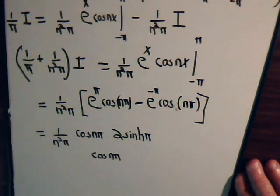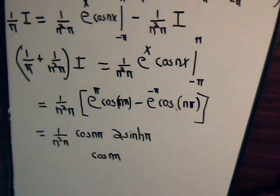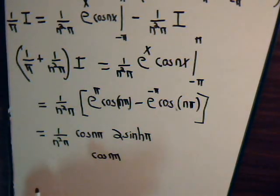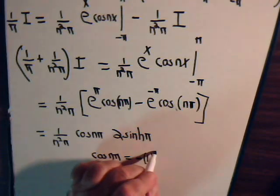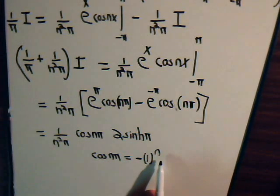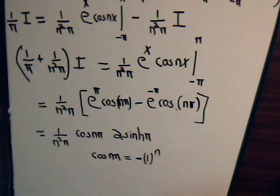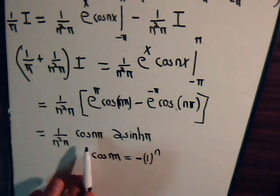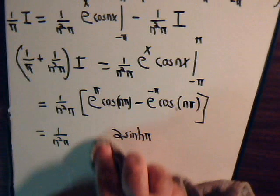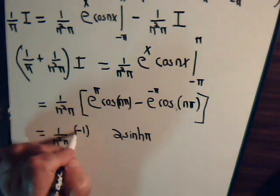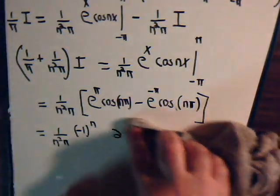Now, what about the cosine of n pi? When n equals one, it is negative one; when n equals two, it is positive one; when n equals three, cosine of three pi is negative one; when n equals four, it is positive one. So this equals minus one to the n — when n is even this is positive, when n is odd this is negative. We can replace cosine of n pi with minus one to the n, giving two times the hyperbolic sine of pi.